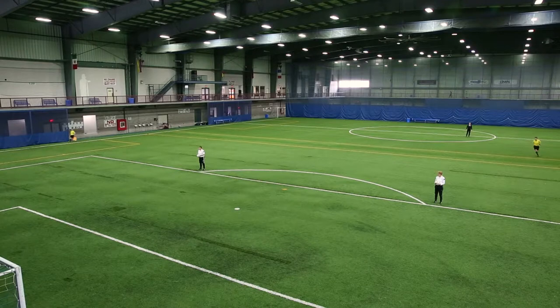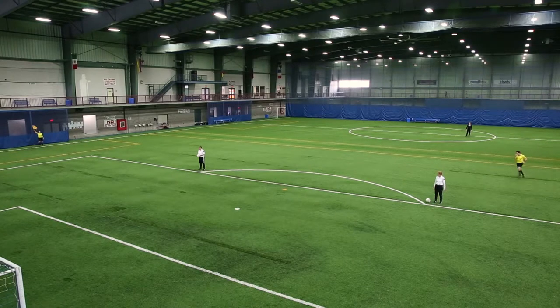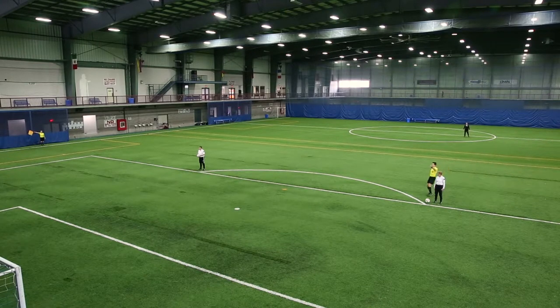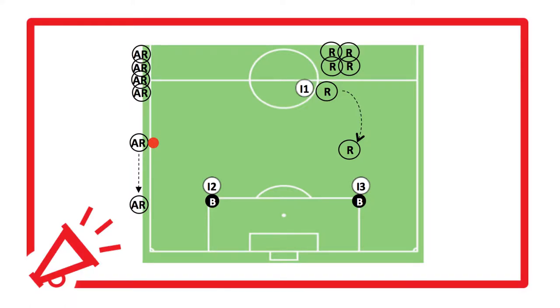Instructor one will blow the whistle when the referee is even with the active AR. Hearing the whistle, either instructor two or three will drop the ball close to or even on the penalty area line, indicating the position where the foul has occurred.